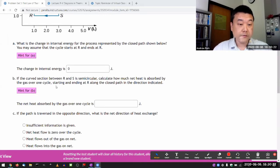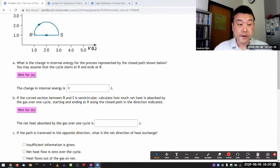If the curved section between R and S is semicircular, confirming what it appears to be in this particular scale of PV diagram, calculate how much net heat is absorbed by the gas over one cycle, starting and ending at R along the closed path in the direction indicated.